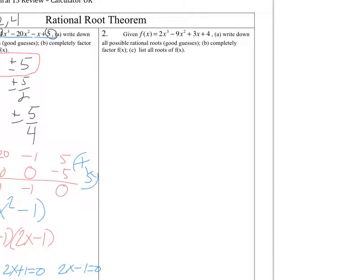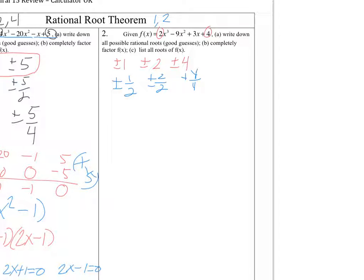For the second problem, we're doing a similar setup. This time, we're looking at 4 and 2. So I'm going to include plus or minus 1, plus or minus 2, and plus or minus 4 as my factors of 4. I've got to divide those both by 1 and 2. I already divided each of them by 1, so let's divide them all by 2 now — so that's plus or minus 1 half, plus or minus 2 over 2, and plus or minus 4 over 2. You might notice that 2 over 2 is the same as 1, and 4 over 2 is the same as 2. I'm going to check this one to see if it's groupable first, but it doesn't look groupable to me. So that was part A.